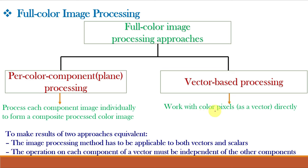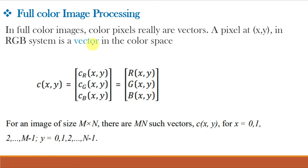From our 32nd video class of DIP, namely color models, we know that each color pixel is a vector which has got three different components R, G and B. For example, in RGB system, any color pixel is a vector extending from the origin to that point in the RGB coordinate system. And it can be expressed as C(XY) = R(XY) + G(XY) + B(XY). And obviously, for any image size of M cross M, there are M squared such vectors.